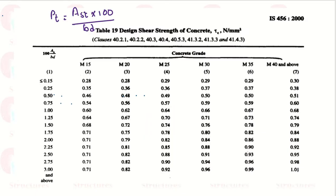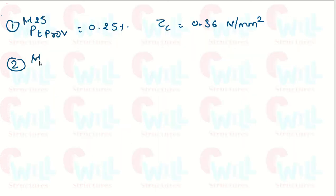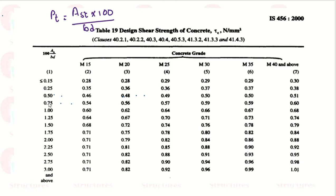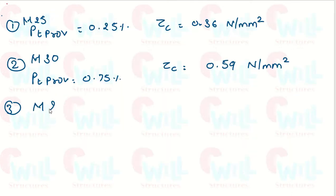Now let's see another example. We have grade of concrete M30 and PT provided is 0.75%. Looking at the table for PT = 0.75 and the M30 column, the value of tau c is 0.59 Newton per mm².